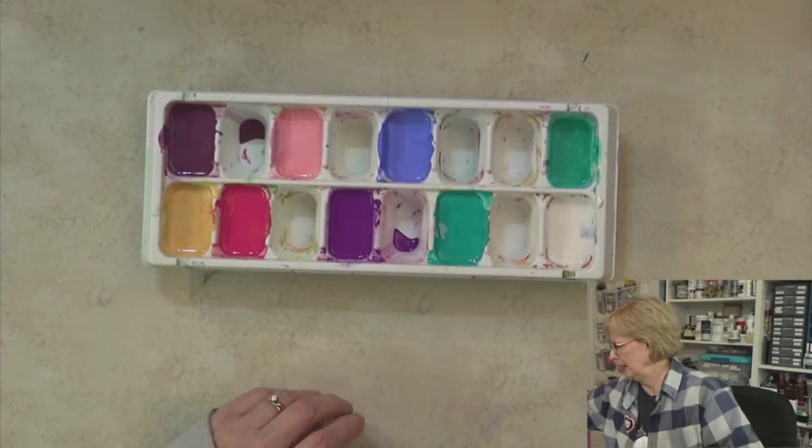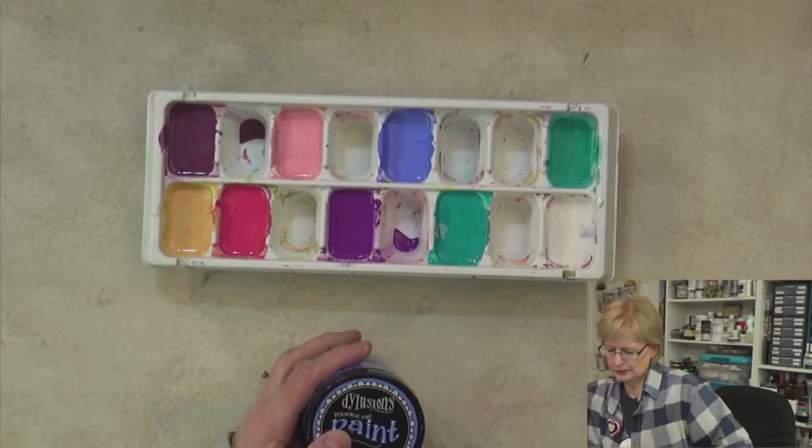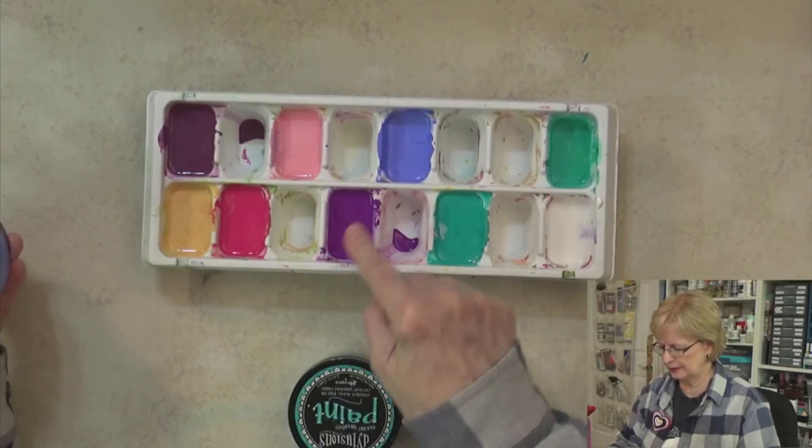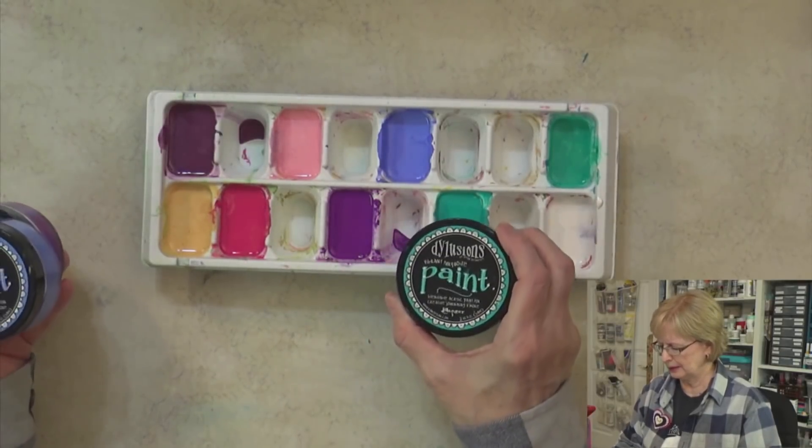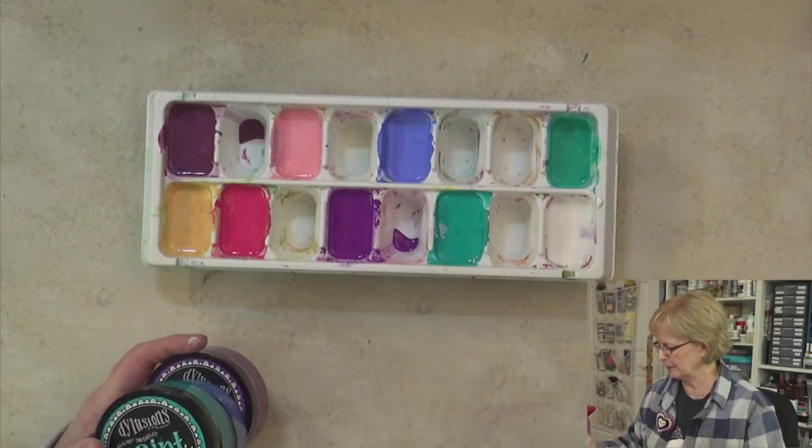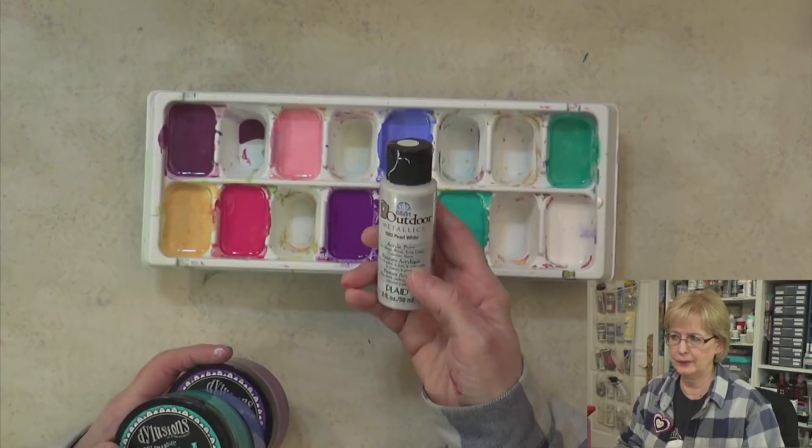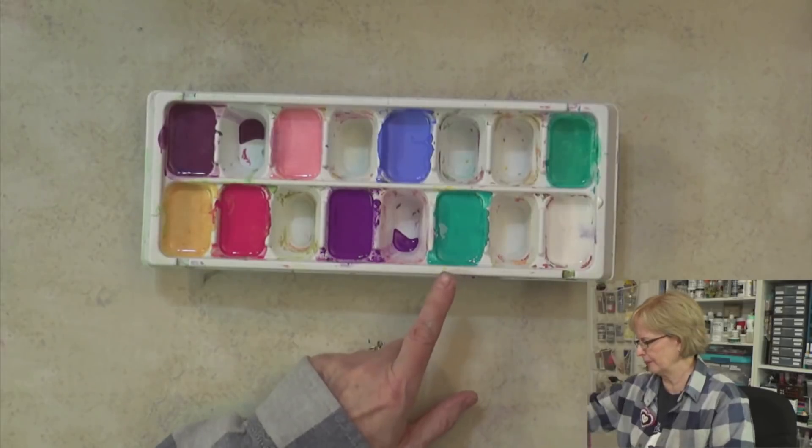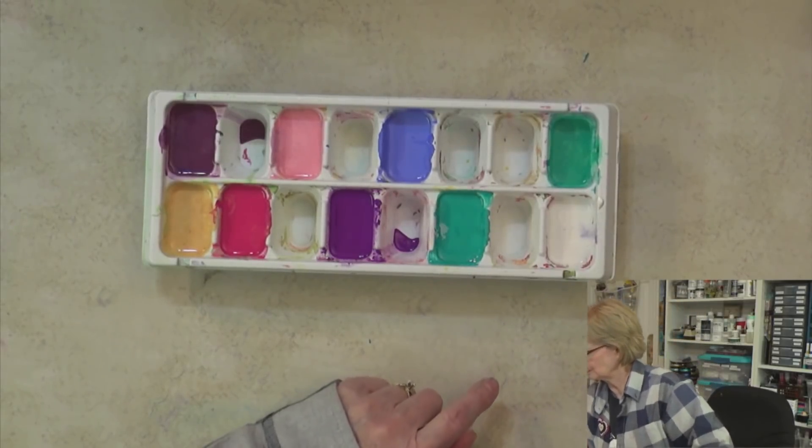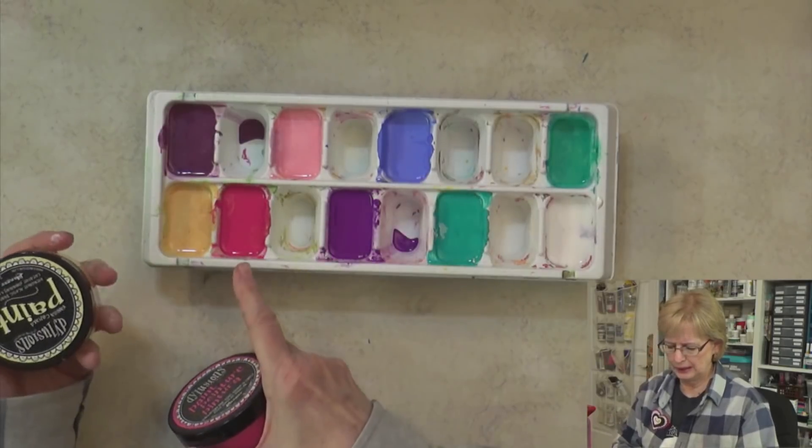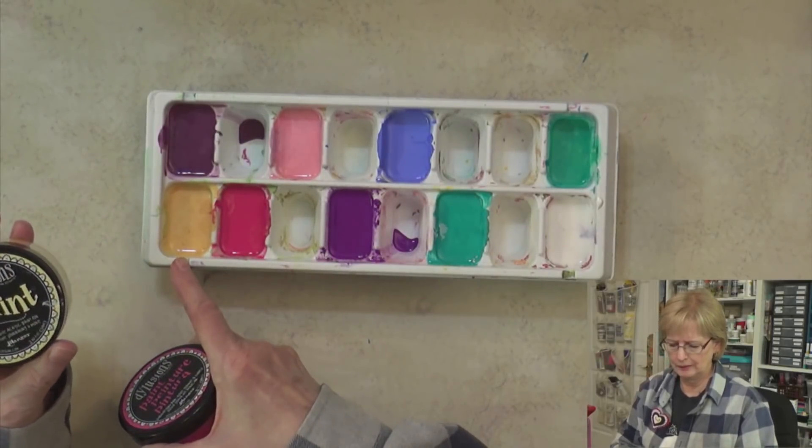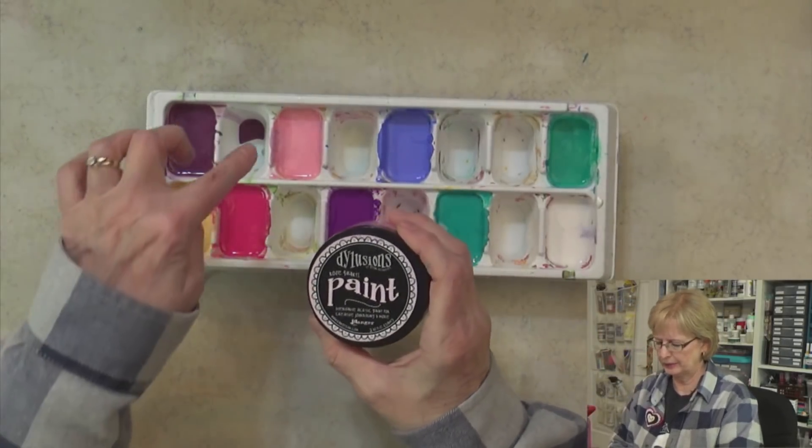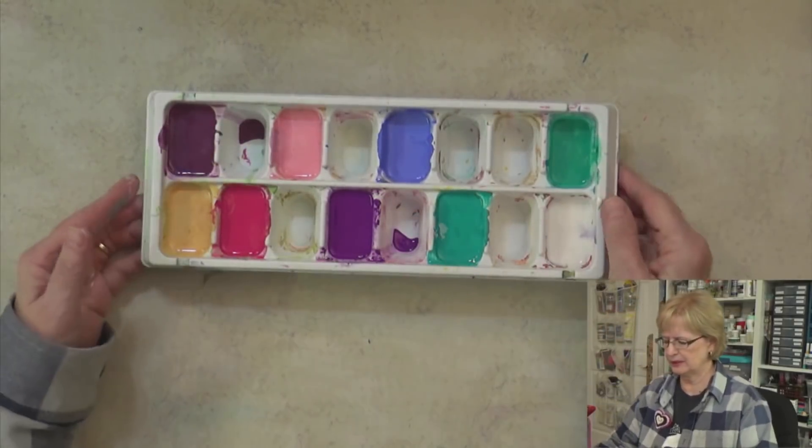The rest of the colors are Daler-Rowney dilutions: crushed grape, periwinkle, vibrant turquoise with a little bit of metallic pearl white from Folk Art. This is bubblegum pink, this is vanilla custard with a little metallic gold, and this one is rose quartz. I've mixed them up—they're thin, about the consistency of chocolate syrup.